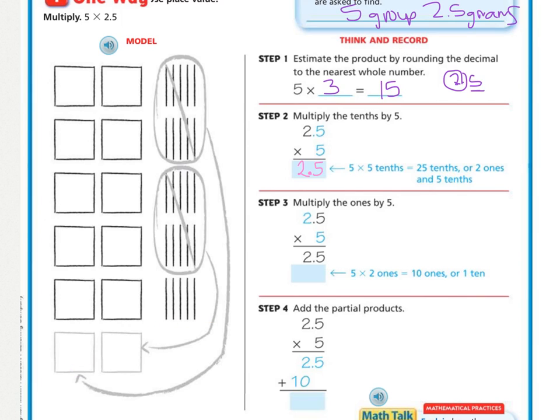And next step is to multiply the ones by 5. So, 2 ones times 5, 5 times 2 is 10 ones. Now, again, we got to keep the place value in line. So, 10 ones. There's no decimals. So, I'm leaving that alone.